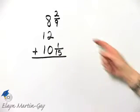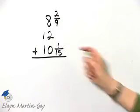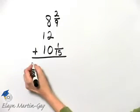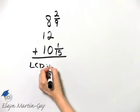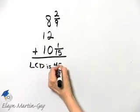So what is our common denominator? For denominators of 9 and 15, the least common denominator is 45.